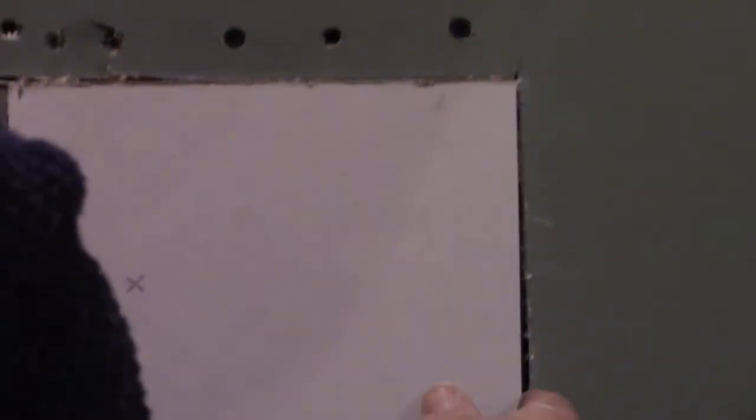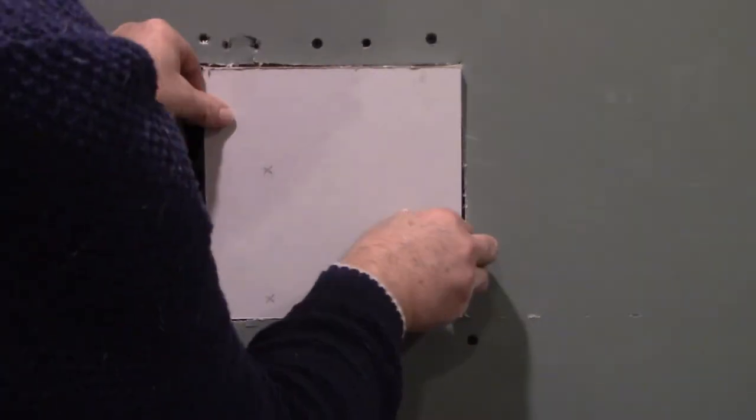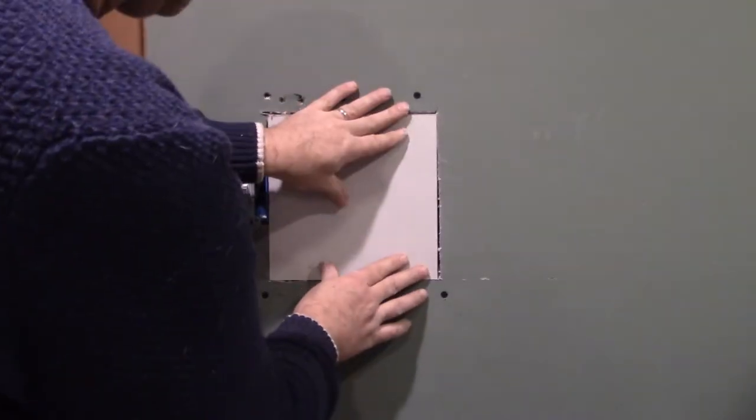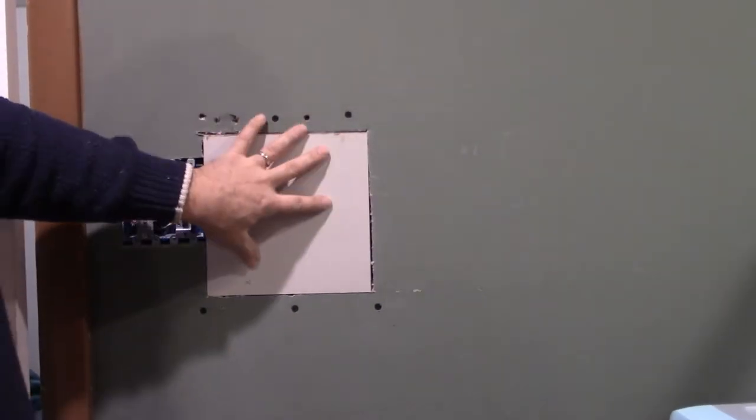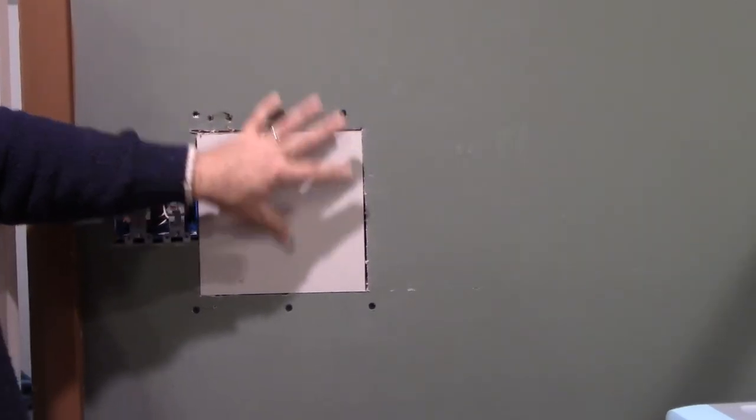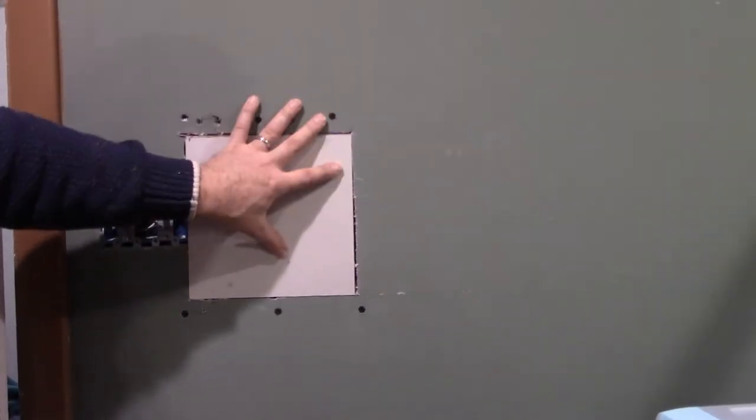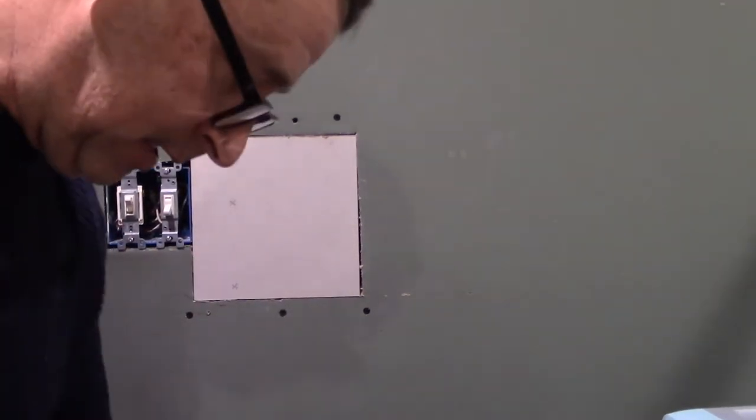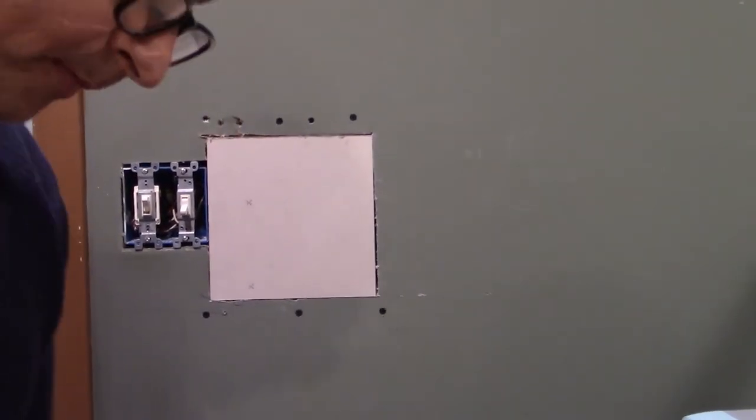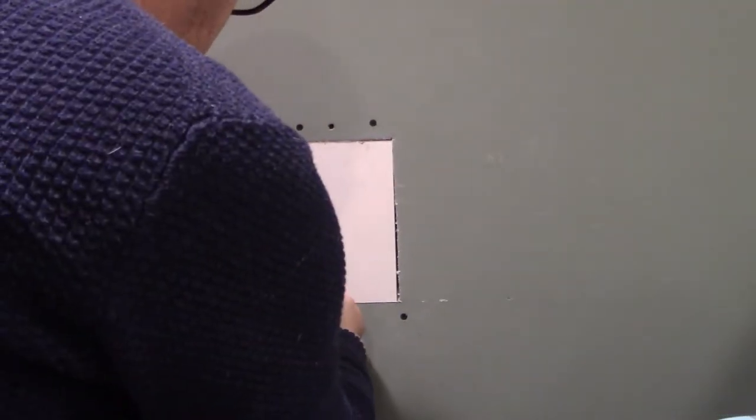All right so that's in. Let's see if we can get our patch. Sheetrock comes in different thicknesses. You want to make your patch out of the same thickness of sheetrock that the wall is. Because if you put something too thick it's sticking out too far. And so that would be a problem. We usually use half inch. Most places are half inch.